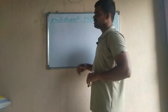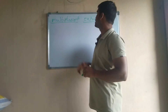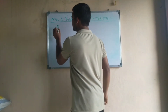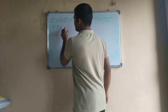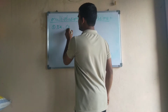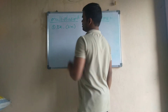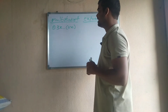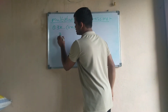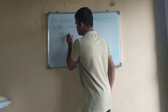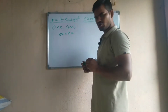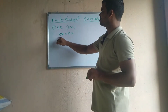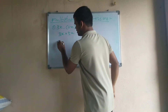Now we have multiplication of expressions. I just want to multiply a monomial expression with a monomial expression. So that is 3x into 3x. Both are monomials because we have only one term in the expression. So 3 times 3 is 9, and x into x is x squared.